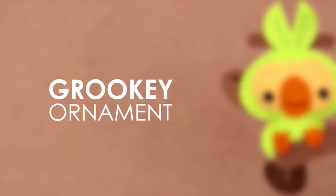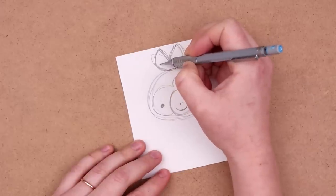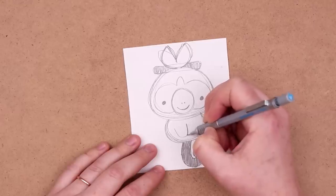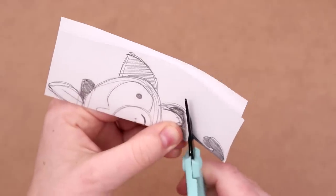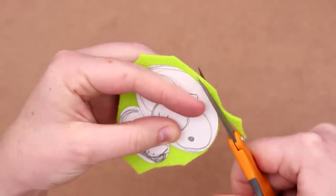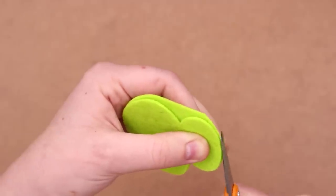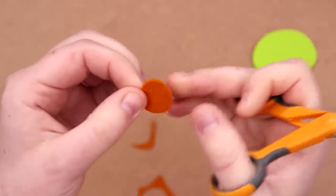For our final starter we have Grookey. Now I am not a fan of monkey Pokemon or just monkeys in general. They're kind of weird, they kind of freak me out. They look a little too much like humans and just in general I don't find monkeys cute. Sorry monkey lovers. But wow did this ornament turn out so stinking adorable. It is the best ornament out of this batch and it kind of makes me like Grookey a little bit.